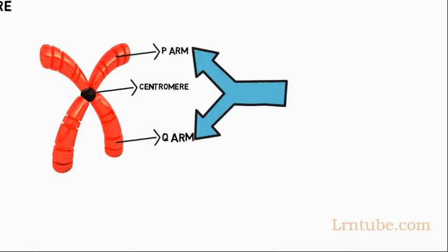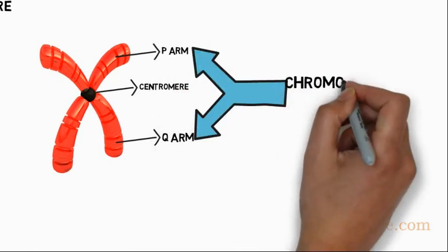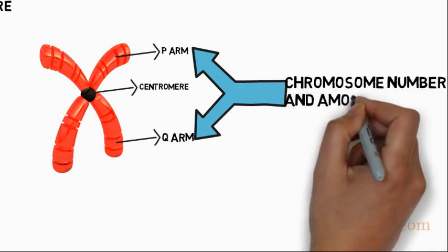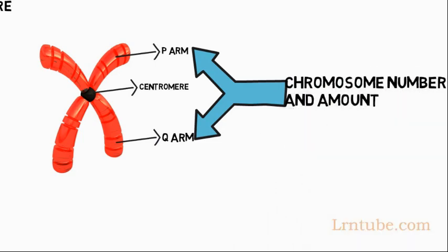The P and Q arms are used in cytogenetics to determine how many chromosomes are present in a cell and what chromosome number they are.